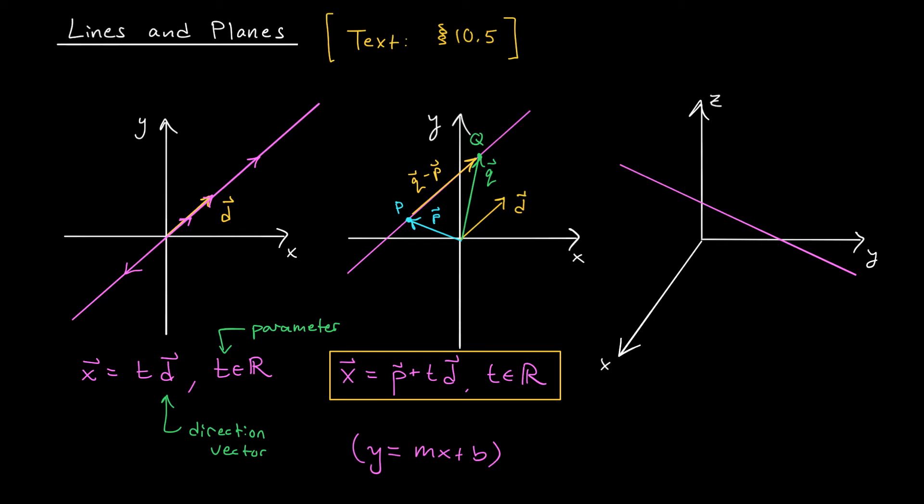Now, what's really nice is that all of this theory extends to higher dimensions. For example, if you want to write down the equation of a line in R3, it's going to look exactly the same. P, a point on the line, plus T times D, a direction vector for the line. Now, let's check out some examples.